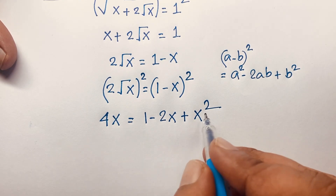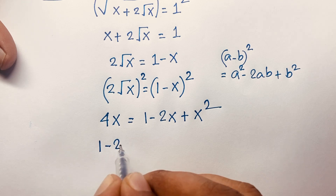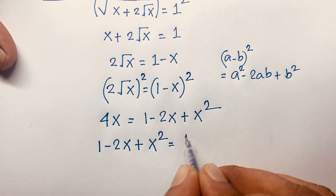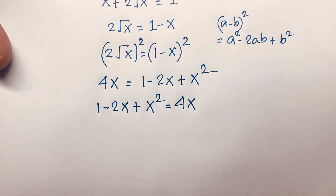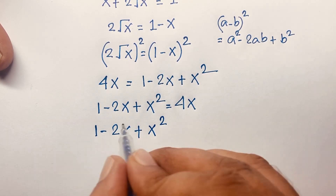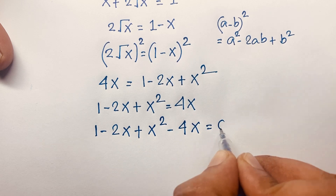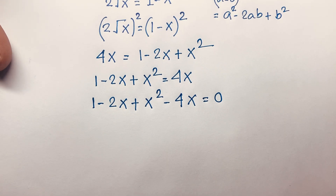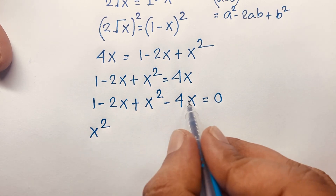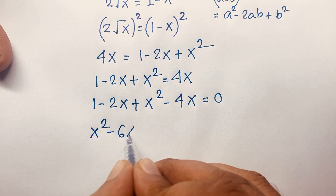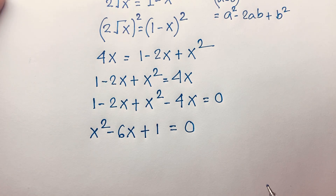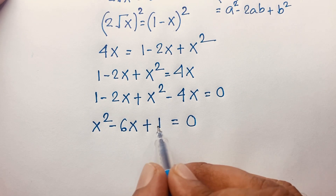Now we find that 4x equals 1 minus 2x plus x squared. Moving 4x to the other side gives x squared minus 2x minus 4x plus 1 equals 0. Combining the x terms: it will be 6x, so we have a nice quadratic equation: x squared minus 6x plus 1 is equal to 0.